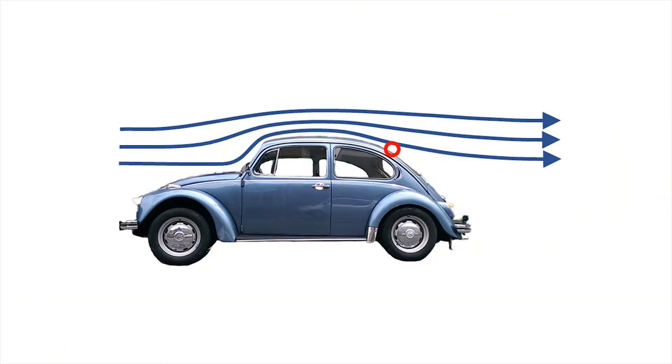You may remember one of our previous videos in which we analyzed the aerodynamics of a vintage Volkswagen Beetle. We discovered that the airflow over the car detached somewhere around the rear window, and the theory was that this happened because the downward angle was too steep for the flow to stay attached.